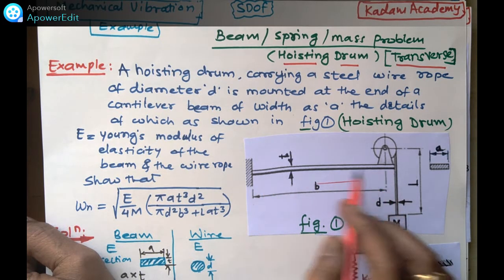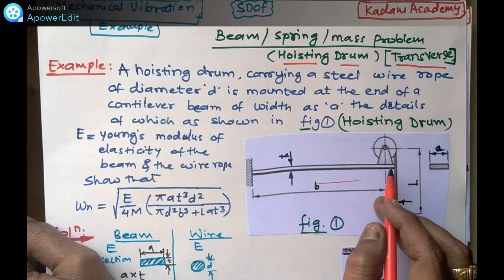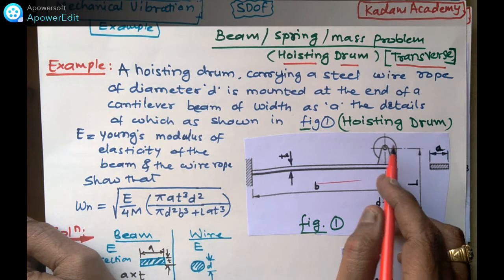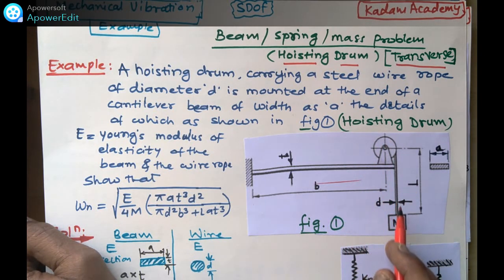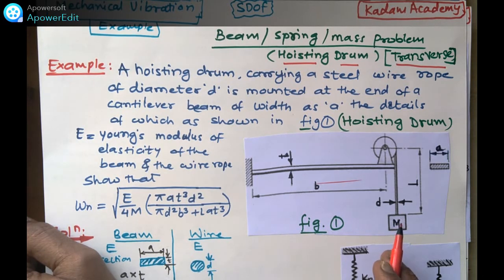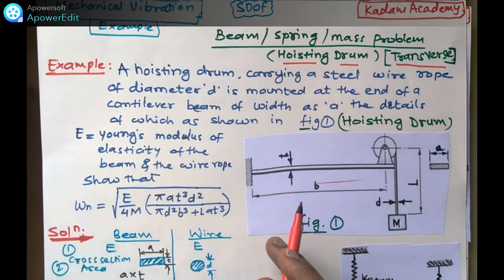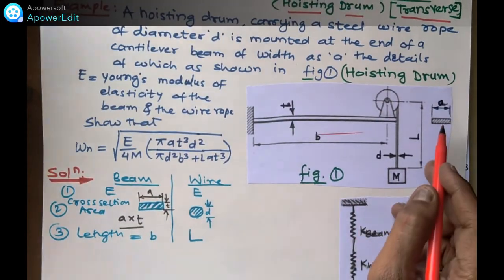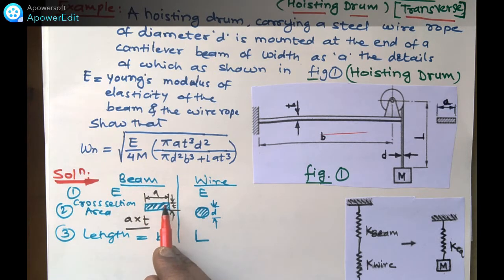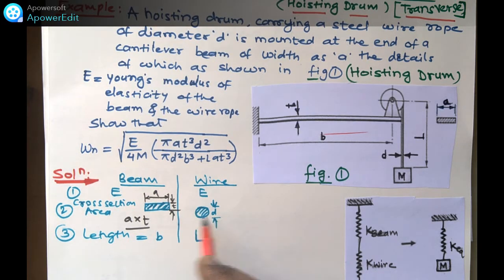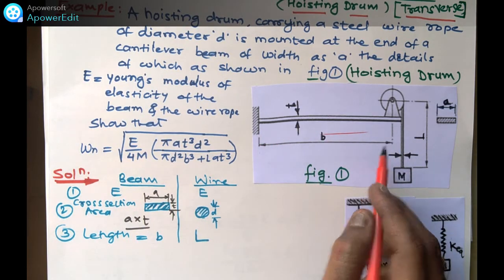This picture shows you a beam that is fixed-free: one end is fixed, the other is free. A pulley arrangement is there, and on this pulley a wire is mounted. The wire drop is fixed with the load of mass capital M. The wire has diameter d, the beam length is shown as capital L, and the beam has a rectangular cross-section with dimension a and thickness t.